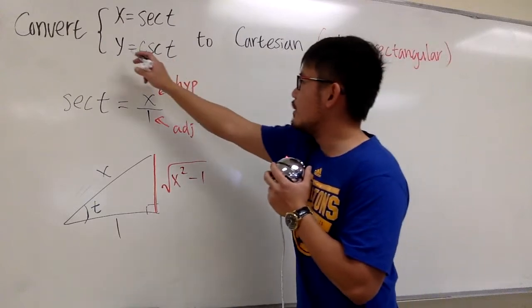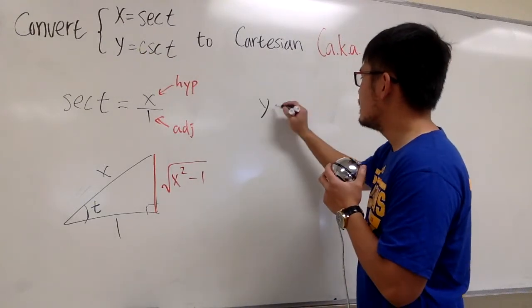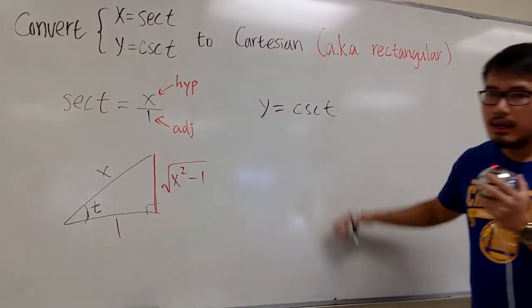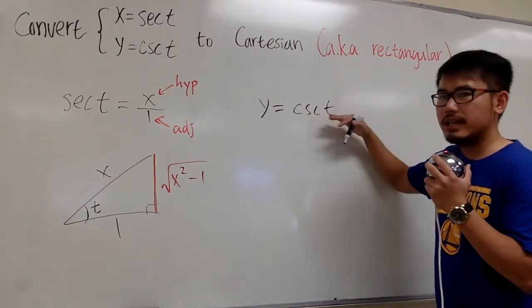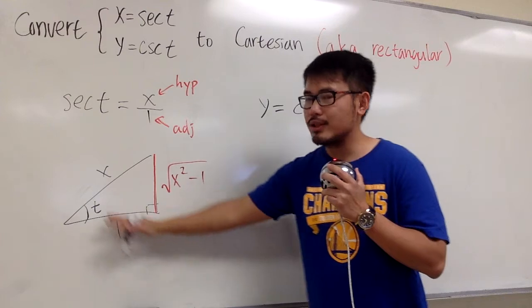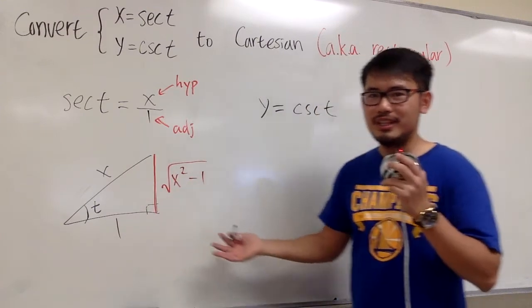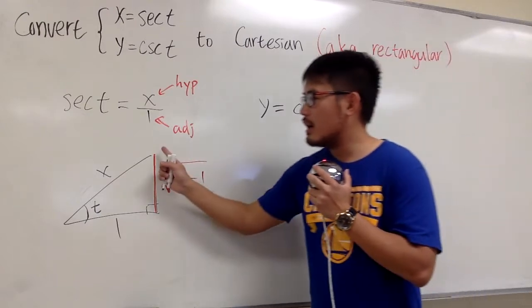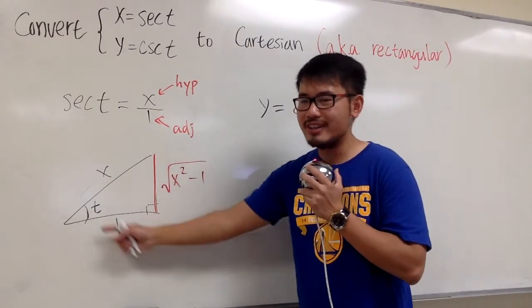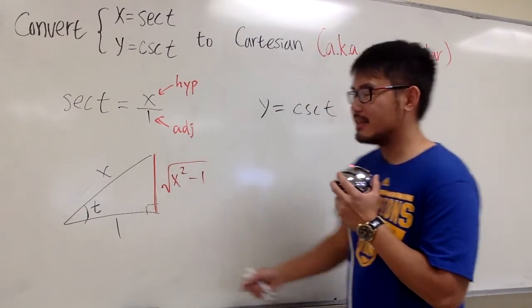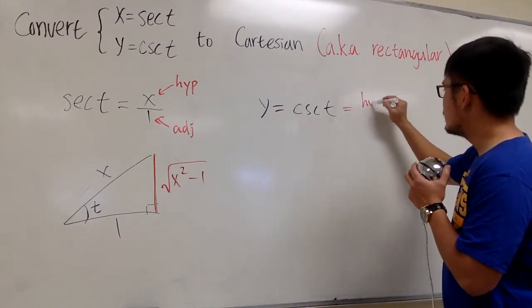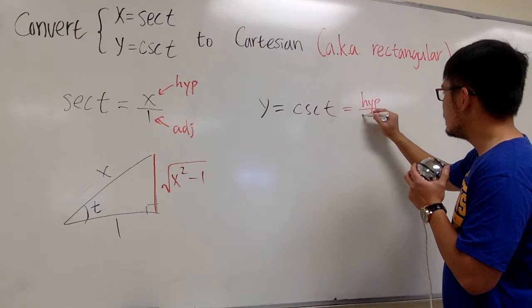And now, if you look at the y equation, we have y is equal to cosecant t. I just have to figure out what's cosecant t in this right triangle. What's cosecant? Cosecant means I want to look for the hypotenuse over the opposite side. Let me just indicate this right here, it's the hypotenuse over the opposite side.